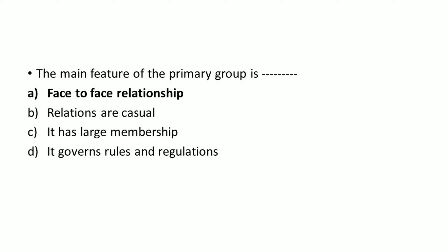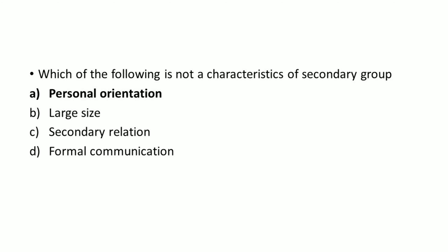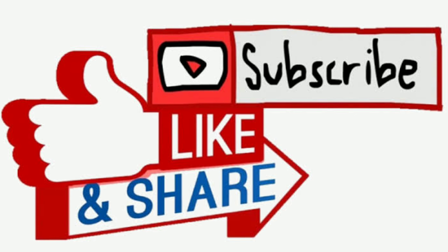Which of the following is not a stage of the social group work process? Right answer: option A, confirming. The main feature of a primary group is: right answer option A, face-to-face relationship. Social group work is a method of social work which helps individuals to enhance their social functioning through purposeful experience — this definition is given by: right answer option B, G. Konopka.